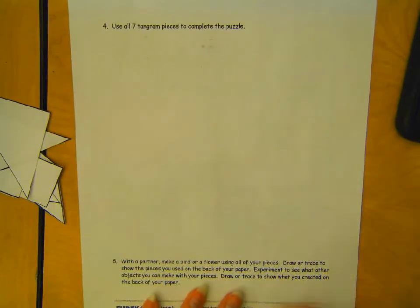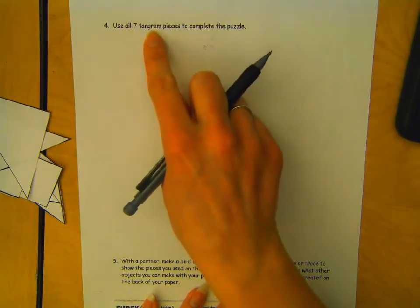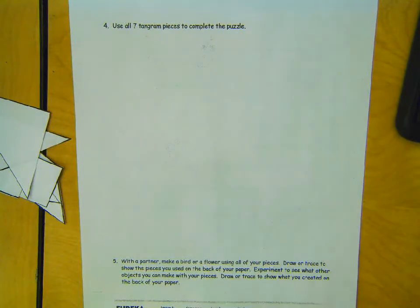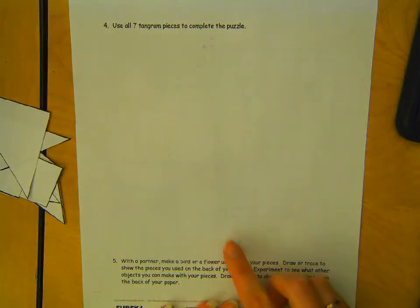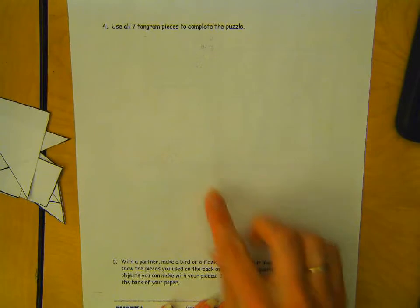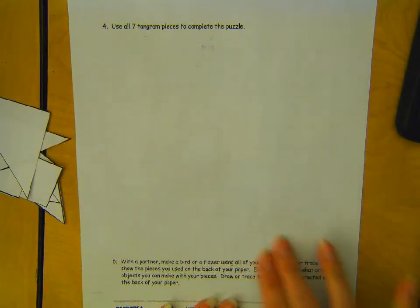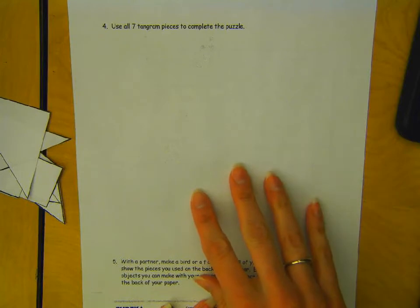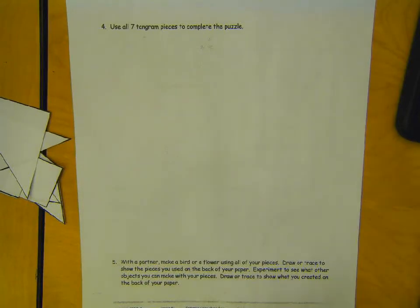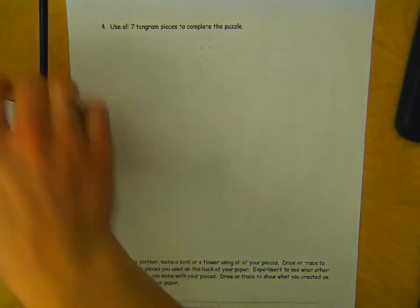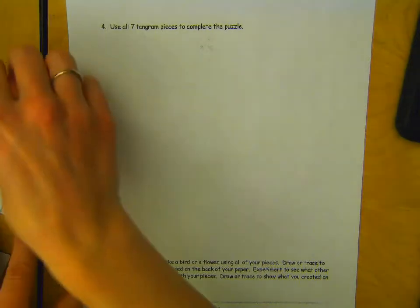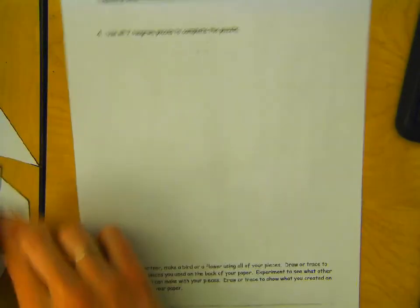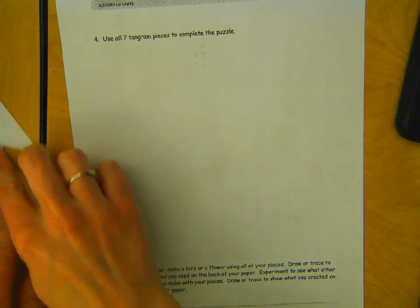And then, it says, use all seven tangram pieces to complete the puzzle. Now, it's really difficult to see. But there is, like, some dotted dots on here to show a cat.